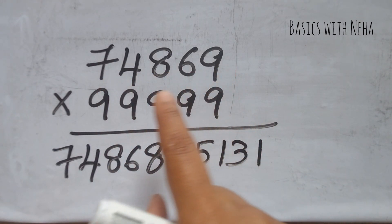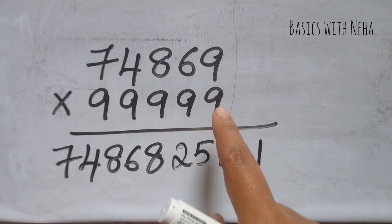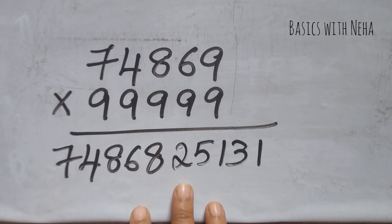So any number into the same number of nines, you have to use this method. And this is the easiest method if you can do the subtraction quickly.